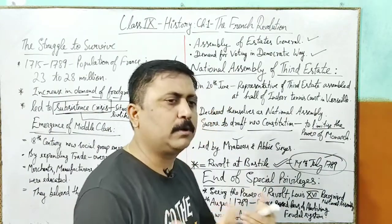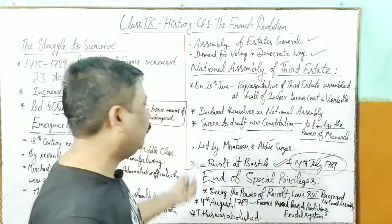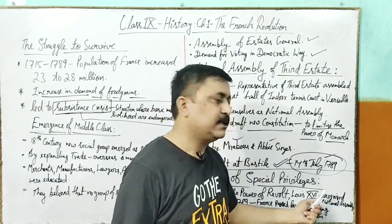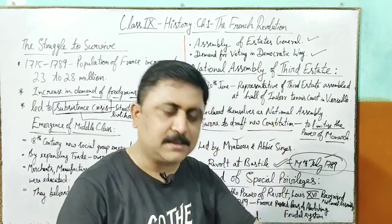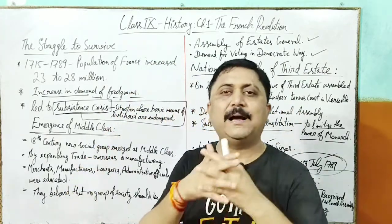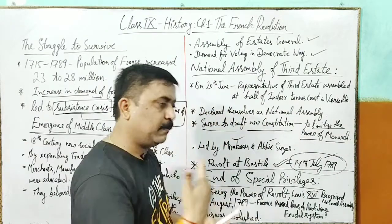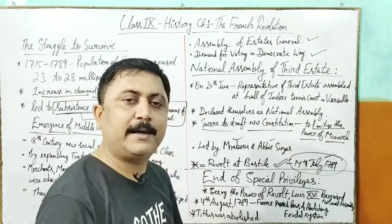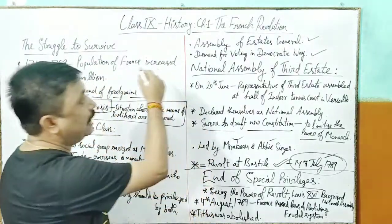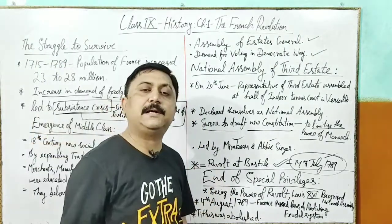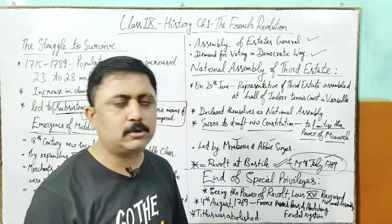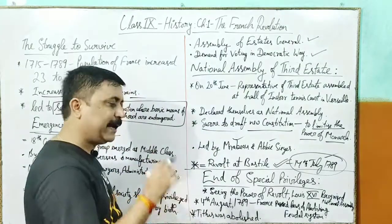Wahan Bastille prison ko todke wahan se arms aur ammunition mile. Aur yahaan se 14 July 1789 ko French Revolution ka revolt outbreak ho gaya. Jab yeh revolt apne poore full form mein aa gaya, king ko bhi samajh aa gaya ki yeh revolt powerful hota chala ja raha hai - kyunki common people mein wide variety of sections the: students, doctors, lawyers, administrative officials, manufacturers, traders. So the revolt became very powerful. Iss powerful revolt ko dekhte hue, King Louis 16 ne National Assembly ko recognize kar liya.